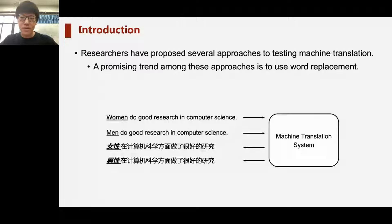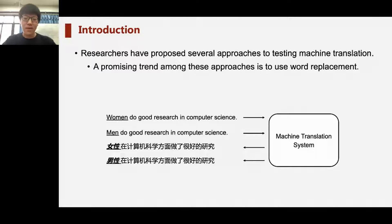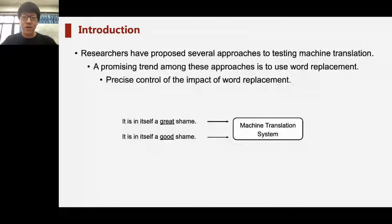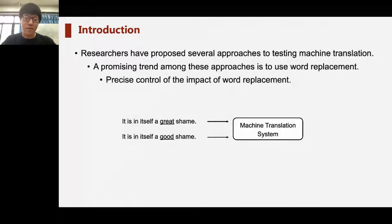For example, given the sentence 'women do good research in computer science,' a testing approach like TransRepair generates an input by replacing the word 'woman' with a similar word 'man.' This pair is fed to the machine translation system; since only one word is changed, their translations should be similar to each other — ideally differing by only one word. However, if the translations are not similar, the approach reports an inconsistency bug. Precise control of the impact of word replacement is still difficult due to the complex semantics of natural language words — for example, the word 'great' is not suitable to be replaced by 'good' in all contexts.